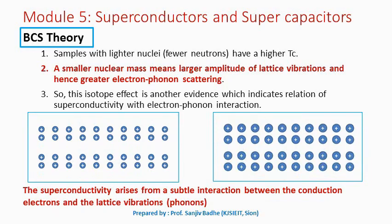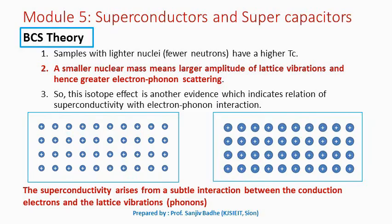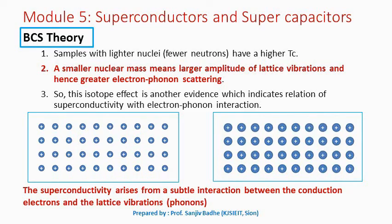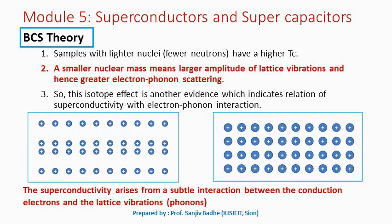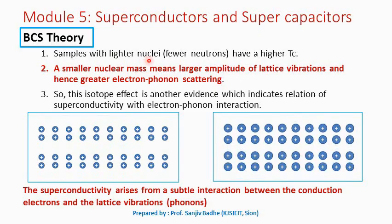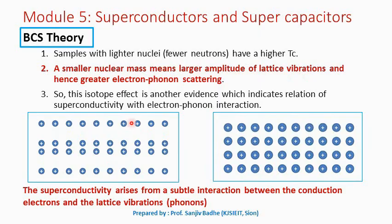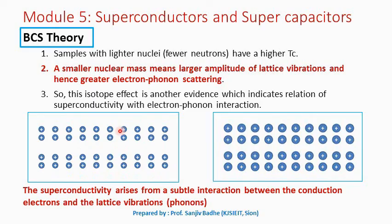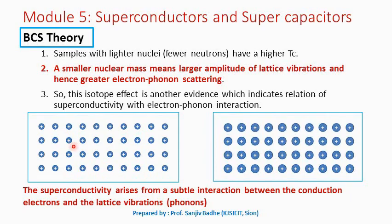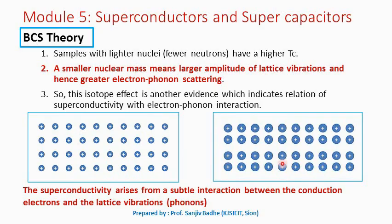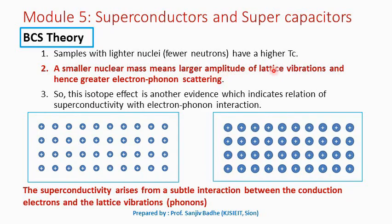Another important observation considered by Bardeen, Cooper, and Schrieffer was that varying the relative abundance of different isotopes has an effect on the critical temperature. Isotope means nuclides having identical nuclear charge but different nuclear mass. It was found that samples with lighter nuclei — that means fewer neutrons — will have a higher value of critical temperature. A smaller nuclear mass means larger amplitude of lattice vibrations, and therefore greater electron-phonon scattering, because larger amplitude means more chance for electrons to collide with vibrating ions.